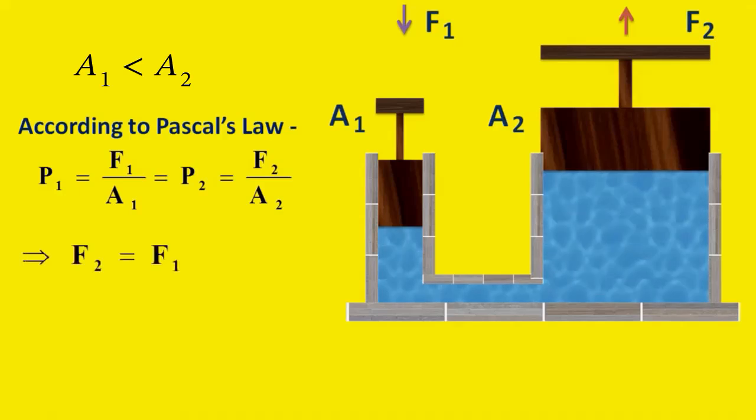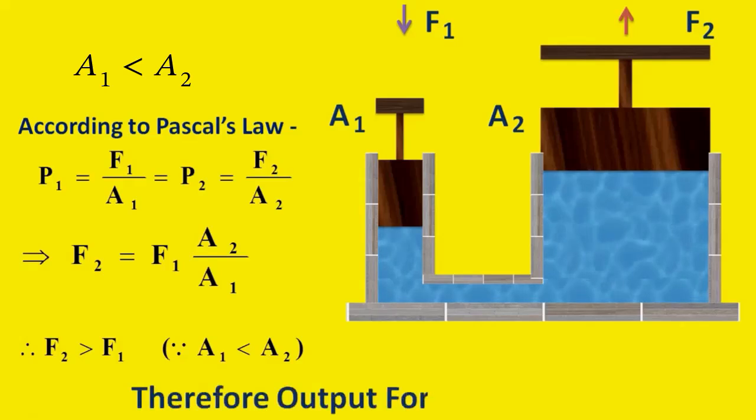This implies that F2 equals F1 times A2/A1. Therefore, F2 is greater than F1 since A1 is less than A2. Therefore, in a hydraulic press, the output force is greater than the input force.